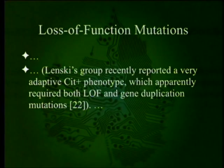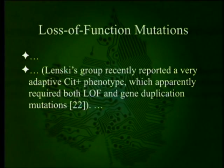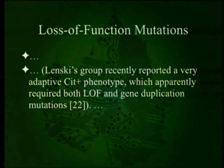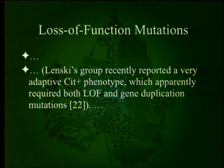Lenski's group recently reported a very adaptive citrate-plus phenotype. The bacteria can now metabolize citrate anaerobically — though it could always metabolize citrate aerobically and always had the citric acid cycle. This apparently required both loss of function and gene duplication mutations. Nothing new was added, unless you want to count gene duplication, which is not any more new than a copy of something.